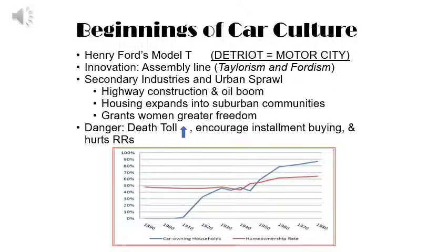This began the era of American car culture, which led to secondary industries and urban sprawl — highway construction amidst the oil boom to provide safe travel for America's growing fleet of cars, and housing expanded into suburban communities along these highways. The car culture granted women greater freedom, but the rising death toll was a danger. It also hurt the railroad industry as more people traveled by private automobile rather than by rail.